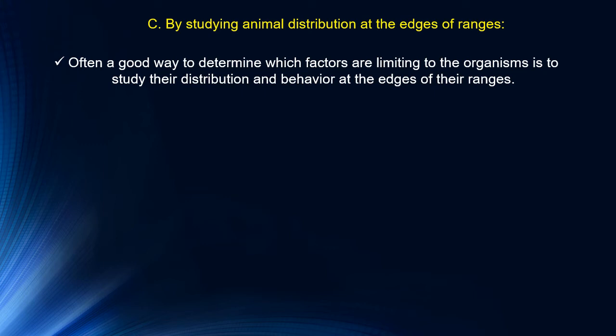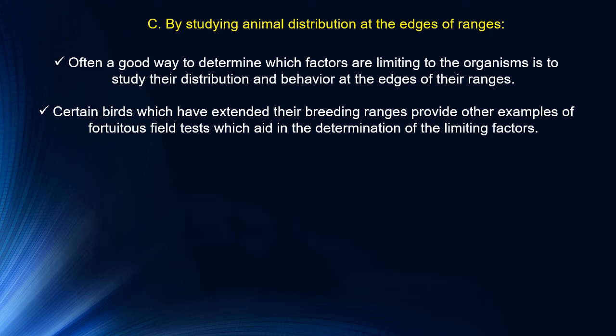In this case, some factors under consideration continue to vary in a normal manner instead of being controlled in an abnormal or constant manner. Some tree line studies are classic examples of this type of investigation. However, field studies do not always provide the full answer and lab experiments are sometimes needed to isolate the effective causes of the phenomenon under study. Certain birds which have extended their breeding ranges provide some important examples of this type of approach.